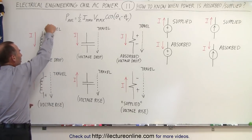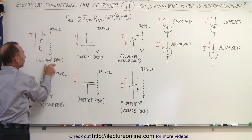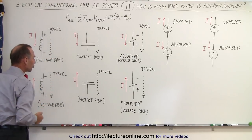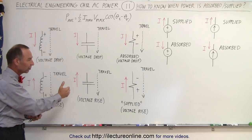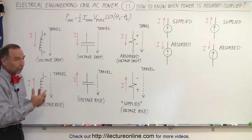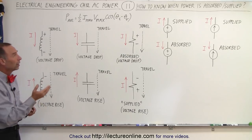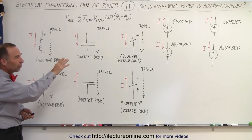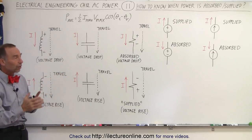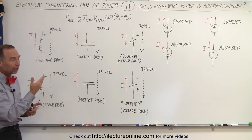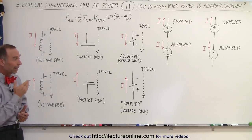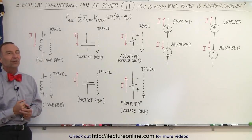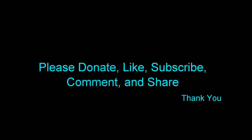Same with inductors. If we travel around the mesh in the same direction as the current, we'll have a voltage drop across the inductor. If we travel in the opposite direction of the current, then we'll have a voltage rise — so that's still the same as we have for capacitors and resistors. Pure inductors and pure capacitors do not consume any power; they don't absorb any power — only resistors do. And only power supplies and current supplies, depending upon which direction the current flows relative to the polarity and relative to the current inside the current supply. And that's how we know the difference when power is absorbed or when power is supplied in a circuit.